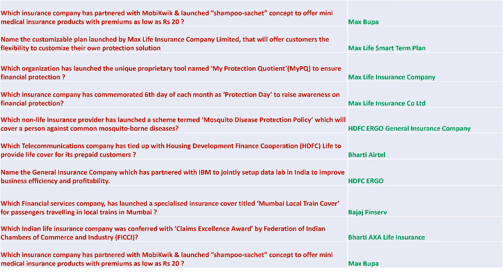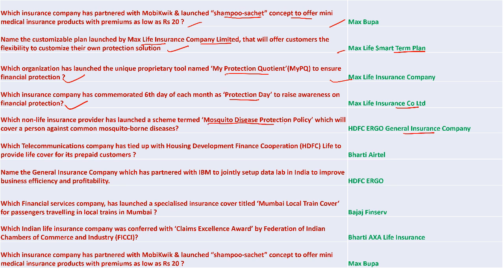Max Bupa partnered with MobiKwik and launched the Sampo Chataye concept to offer mini medical insurance products with premiums as low as 20 rupees. Max Life Smart Term Plan offers customers the flexibility to customize their own protection solution. Max Life Insurance launched a Protection Quotient to ensure financial protection and decided to commemorate the 6th of each month as Protection Day. HDFC ERGO General Insurance launched a Mosquito Disease Protection Policy covering common mosquito-borne diseases.